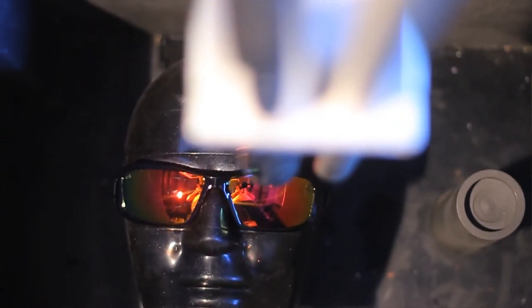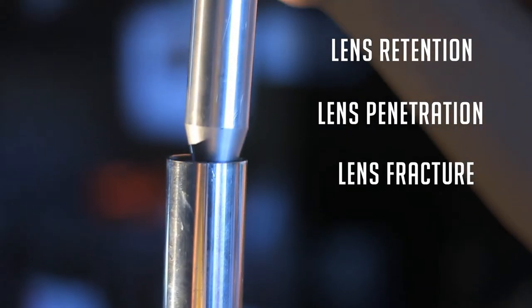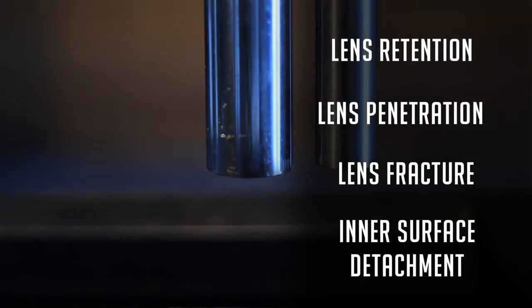There are four separate failure modes. The first would be lens retention. The second would be lens penetration, a lens fracture. Finally, if there's any inner surface detachment from the protector.